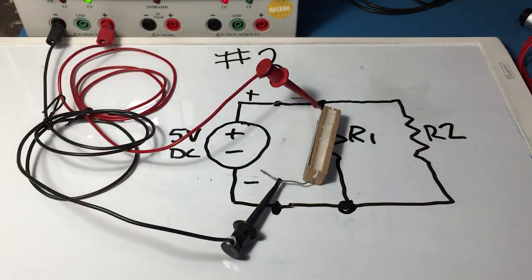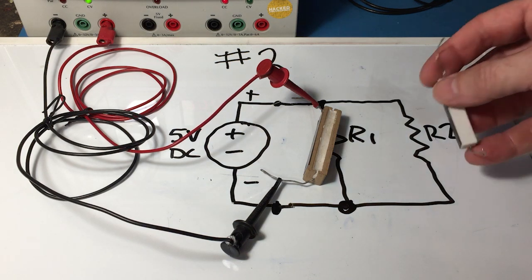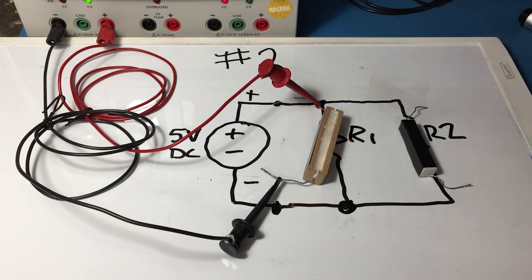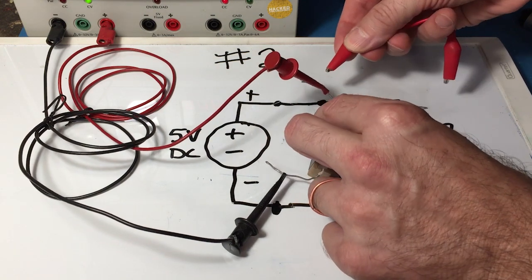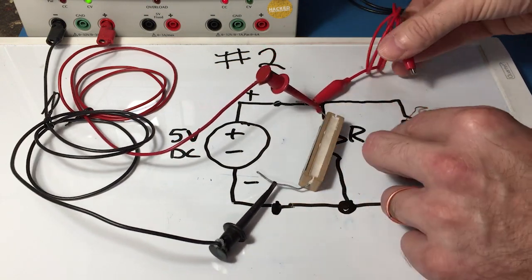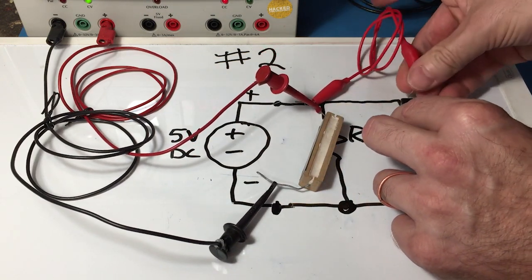There we have our resistor 1. We're going to add our resistor 2 here. And I'm going to make this parallel connection with these alligator clips. Clip those together like that.